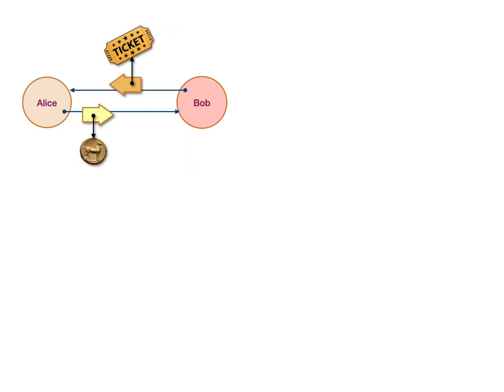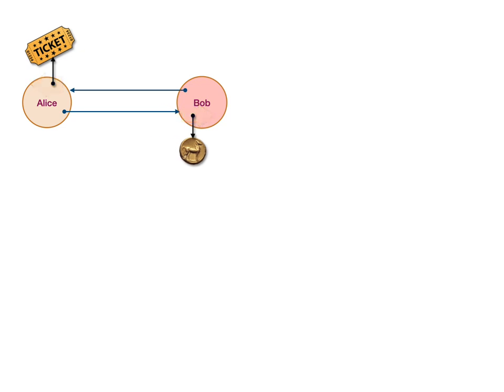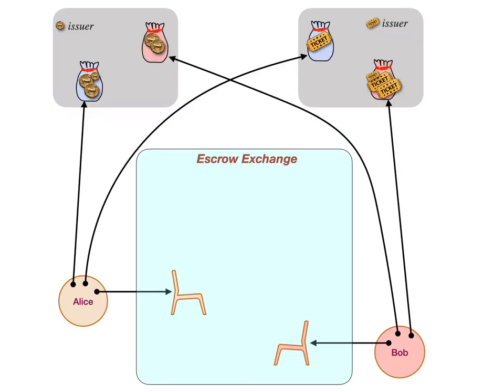What we need is all-or-nothing bilateral trade with offer safety: either Alice gets the ticket she wanted and Bob gets the money he wanted, or the entire trade is called off and none of the participants lose anything. To do that, we have to introduce an intermediary, which is our escrow exchange, like the vending machine sitting between the buyer and the seller.